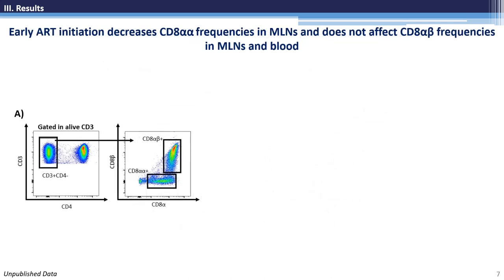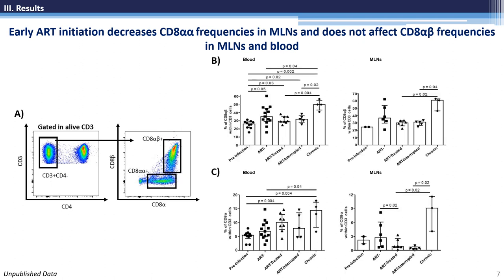The CD8 receptor is expressed in two forms, either alpha-alpha homodimer or alpha-beta heterodimer. Differences in sensitivity to antigen, efficiency of activation, and stage of differentiation have been reported for each isoform. Similar to a previous report on intraepithelial CD8 T cells in the small intestine where an increased frequency of CD8-alpha-beta was reported during SIV infection, here in mesenteric lymph nodes we also observed a higher frequency of the CD8-alpha-beta population in untreated animals. Furthermore, early ART initiation did not affect the frequency of CD8-alpha-beta in either blood or mesenteric lymph nodes. Importantly, this isoform is more susceptible to the inhibitory action of T-regs, an increase in the T-reg frequency within the mesenteric lymph nodes was already reported by us. Early ART initiation decreased the frequency of CD8-alpha-alpha in mesenteric lymph nodes, while higher frequencies were found in blood.